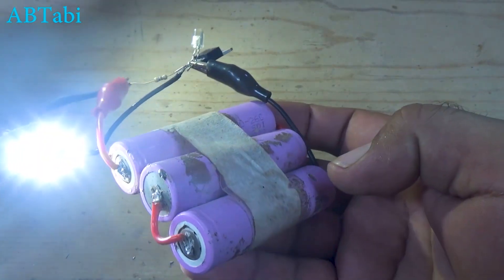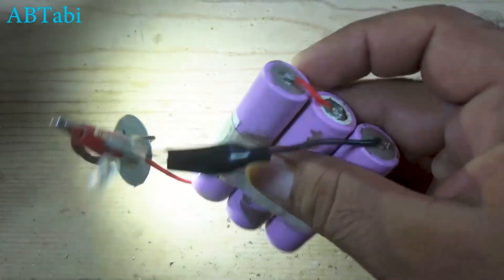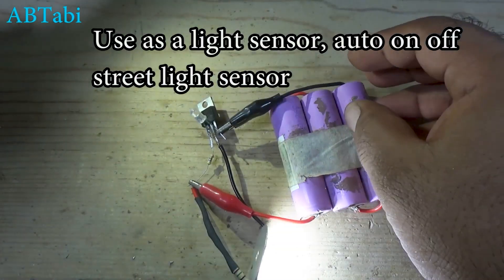And when I move the light away, the LED light automatically turns on. This shows that our light sensor circuit is working perfectly.